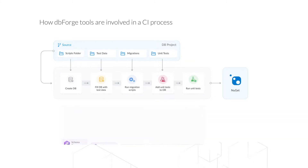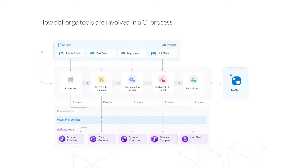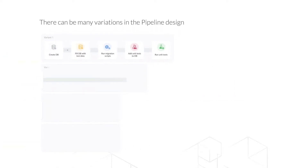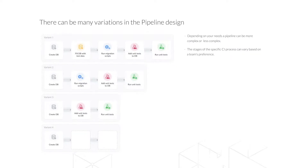This slide displays a pipeline with the following steps: creating a database using the scripts folder and dbForge Schema Compare; filling the database with realistic data using dbForge Data Generator projects from the test data folder; deploying migration scripts to the database using migration scripts from the migrations folder and dbForge Schema Compare tool; adding unit tests to the database from the unit test folder using dbForge Schema Compare tool; and performing unit tests using dbForge Unit Test. As you can see from the diagram, each stage involves the corresponding project folder and dbForge tool. The next slide shows various options for building a pipeline. Depending on your needs, a pipeline can be more or less complex, and the stages of the CI process can vary based on the team's preference.